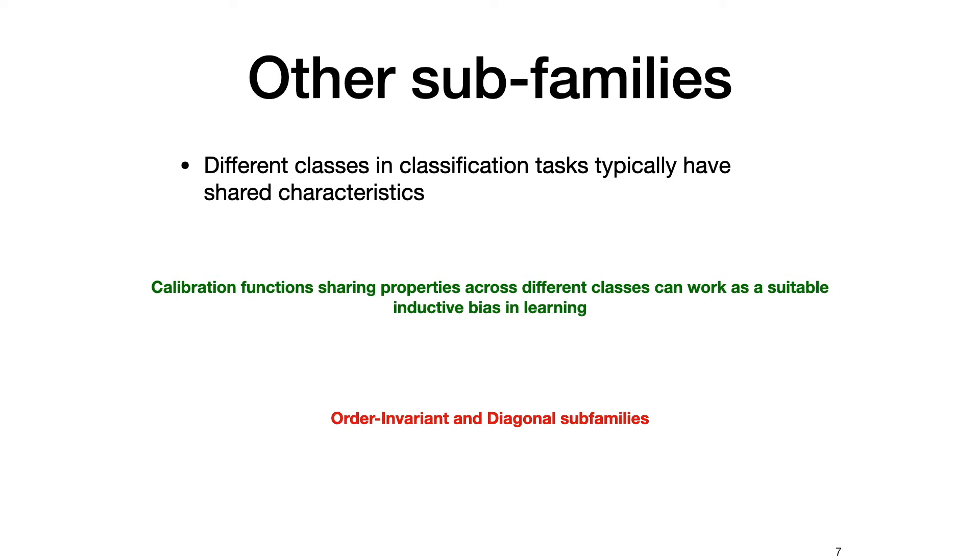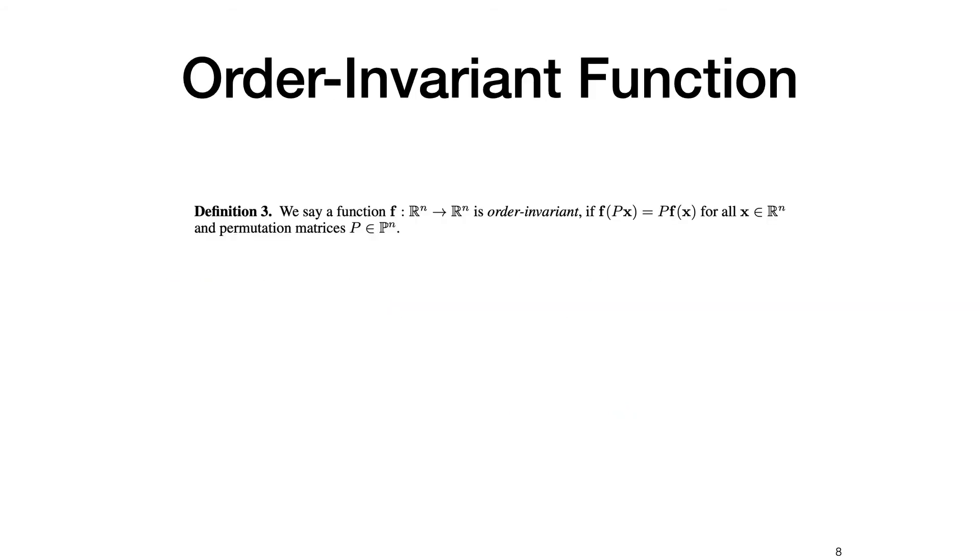I also introduce two other sub-families of intra-order preserving functions which benefit from parameter sharing across different classes. We say a function is order-invariant when we apply it on a permuted input, the output will also be permuted with the same permutation matrix. This means that when two elements in the input are swapped, the corresponding elements in the output are also swapped.